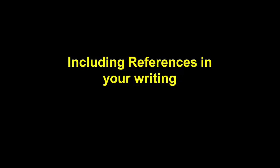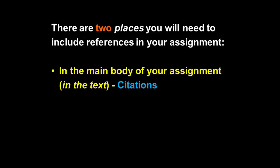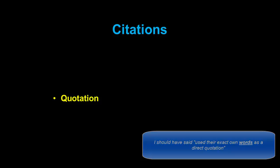Now let's think about the technical aspects of including references in your own academic writing. There are two places you will need to include references in your assignment: citations, which occur within your writing itself, and the references that occur in a separate list at the end of your writing. Citations are references to other people's work where you've explored their ideas either as a paraphrase — putting their ideas into your own words — or as a direct quotation. In both cases, you need to give a citation within your writing.